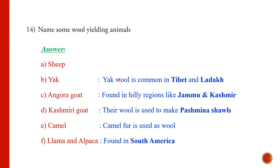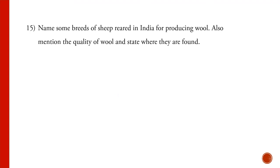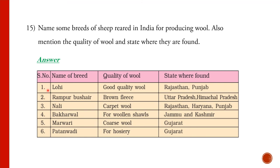Wool-yielding animals include sheep; yak, found in Tibet and Ladakh; angora goat, found in Jammu and Kashmir; Kashmiri goat, whose wool is used to make pashmina shawls; camel, whose fur is also used for wool; and in South America, llama and alpaca are used for wool.